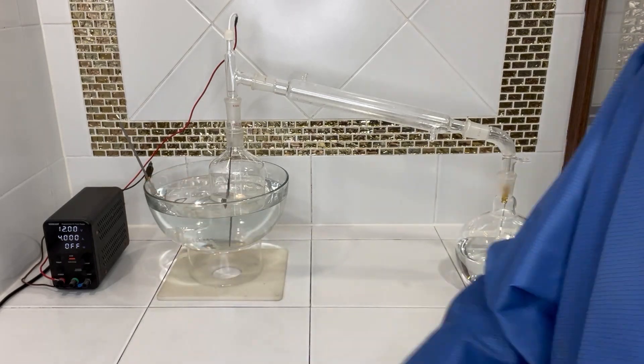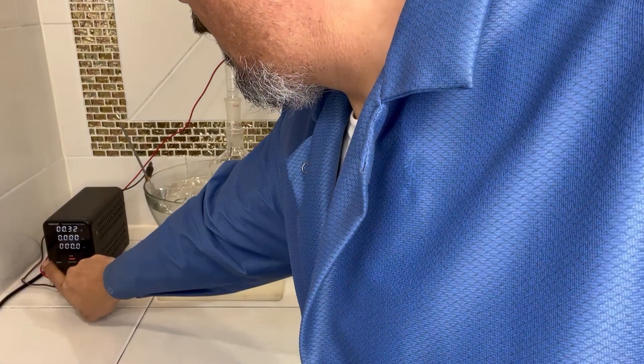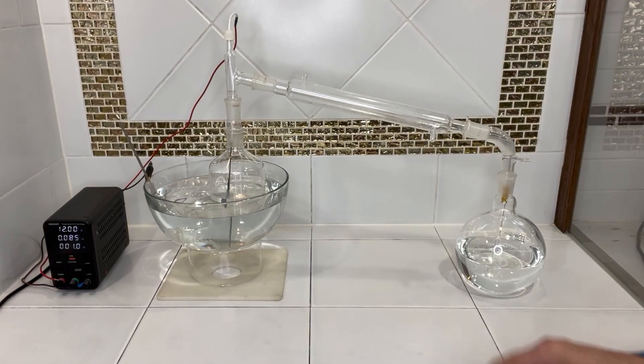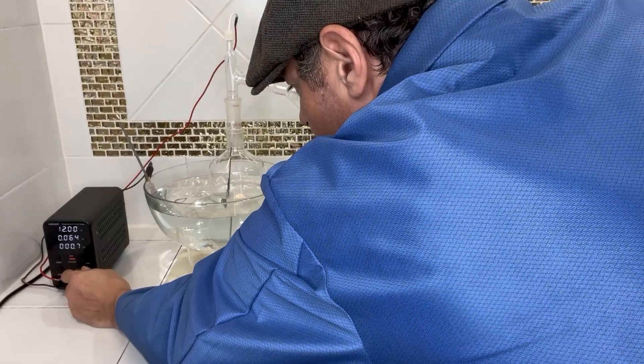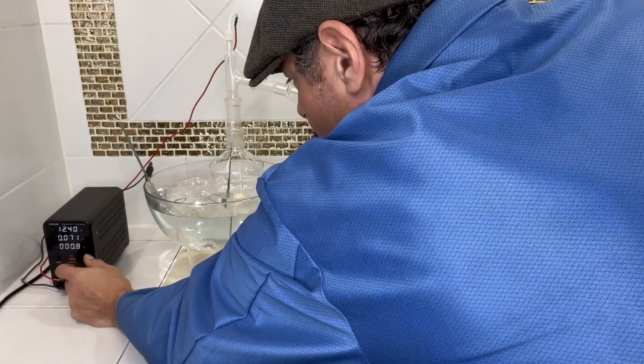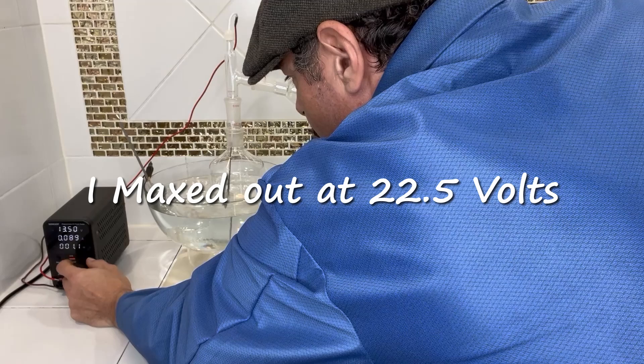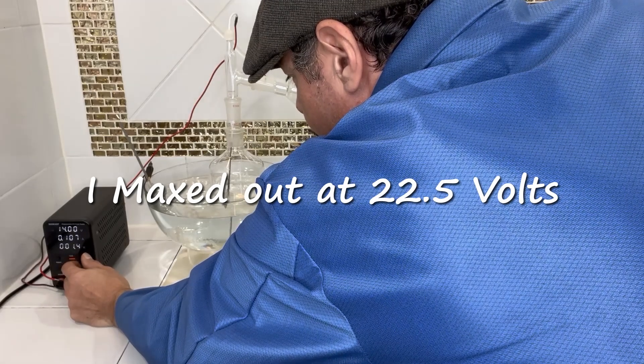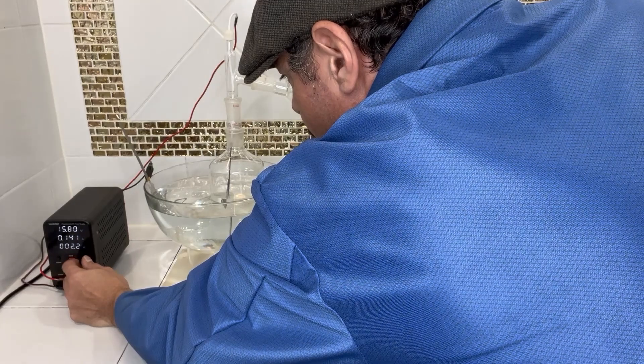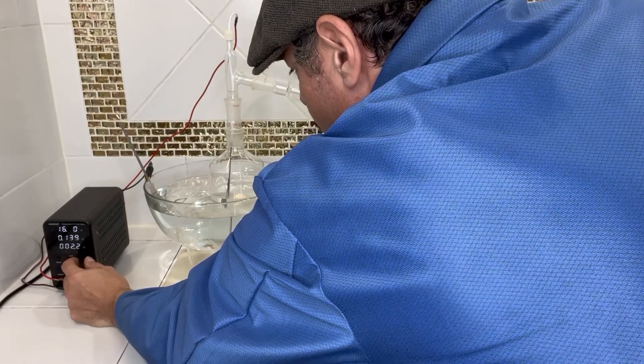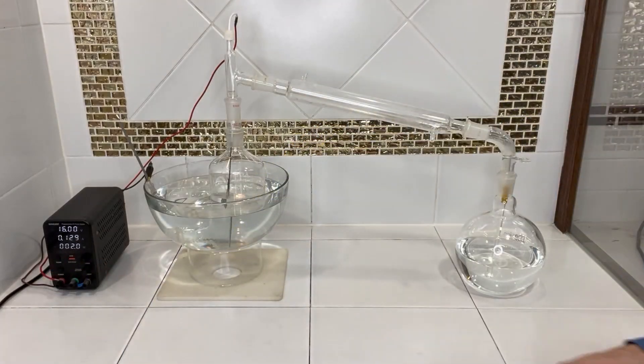So let's go ahead and get it turned on. I'm just going to start with 12 volts. Now I'm going to slowly adjust up the current until I start to see hydrogen forming on the cathode in little air bubbles. I'll bring you in for a little closer look.